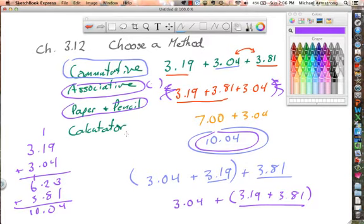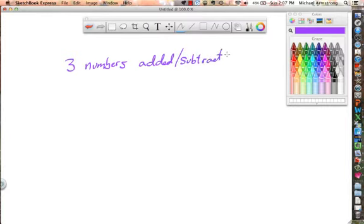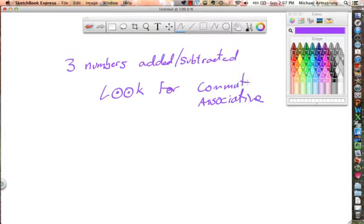And then, of course, the last way would be to get out a calculator and just punch the numbers in. And they want you to make good choices on what you're doing. And I want you to know that if there are three numbers added together or subtracted, I want you to look, using your eyes, look for the commutative and the associative. Look for one of these if there are three numbers added together. If there's not, then you can use paper and pencil or calculator. If there's three numbers, you're going to look for those.